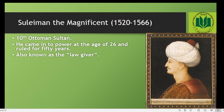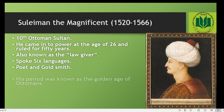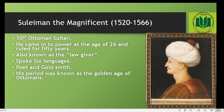Suleiman had huge expertise in government affairs because his father, Salim I, used to entrust him with the governorship of different regions from the age of 17. He was fluent in six different languages, was also a poet and a goldsmith, and his era was known as the golden age of the Ottomans.